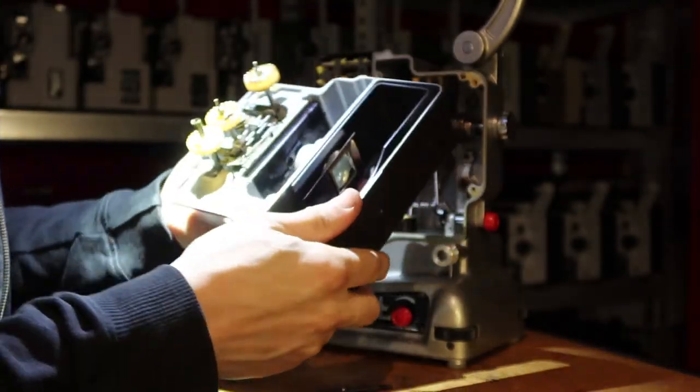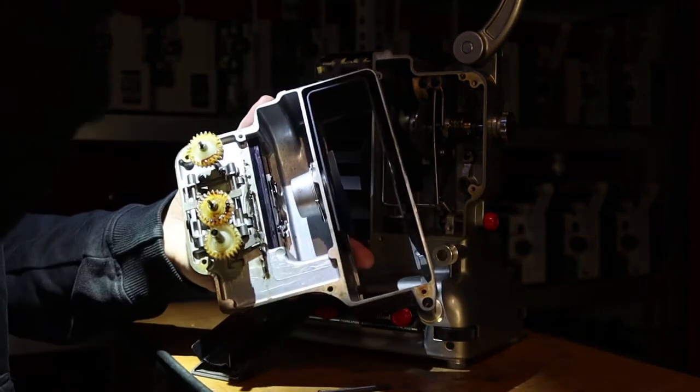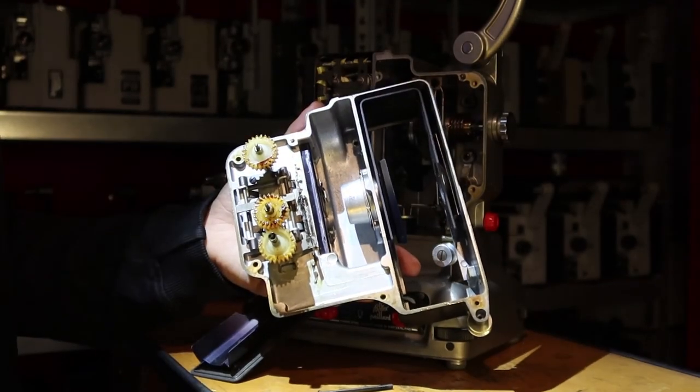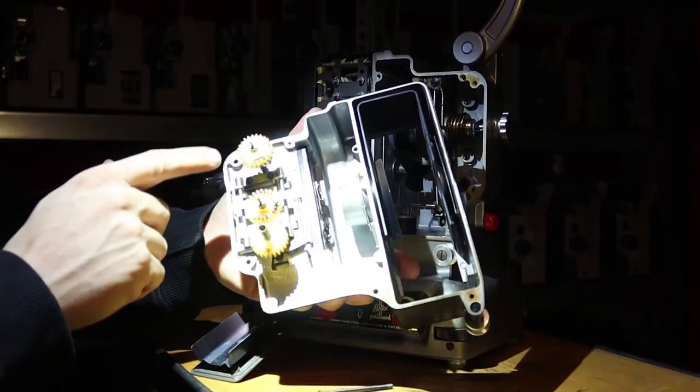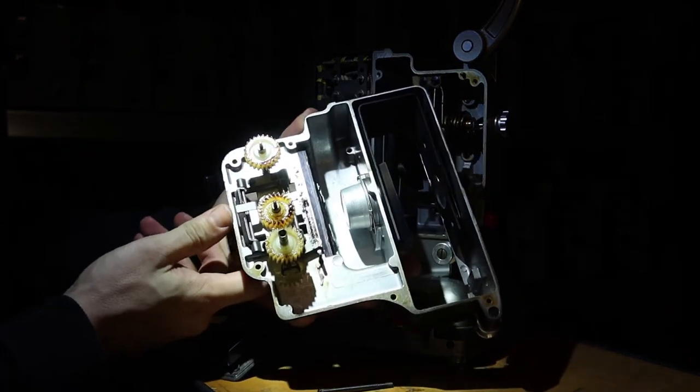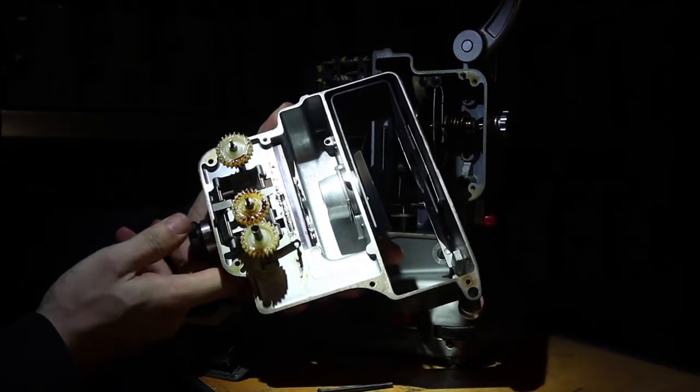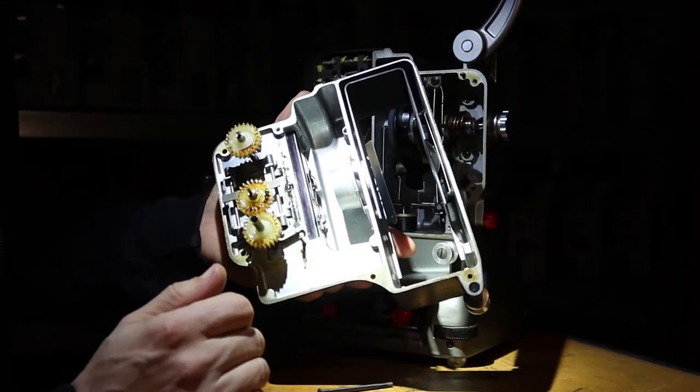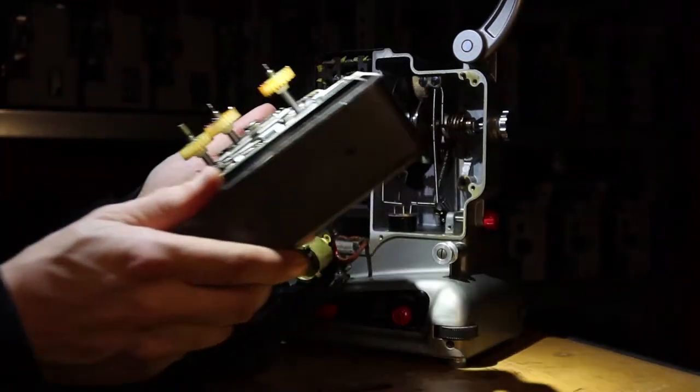And then when I turn it around, you can see the gears, the mechanics, the mechanism for opening up the film gate, the condenser lens, and the reflector. So I'm going to put this aside because this is not an important part right now.